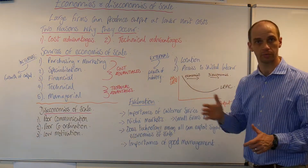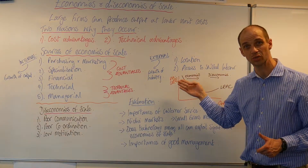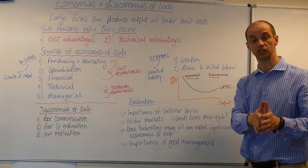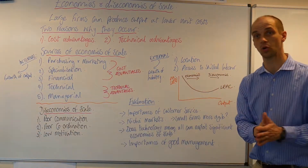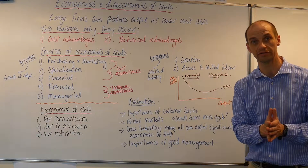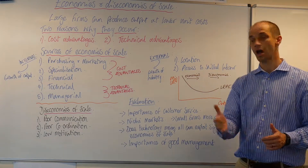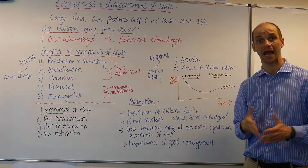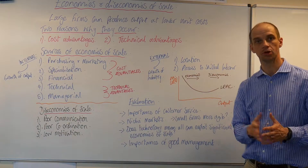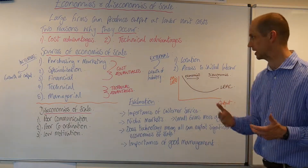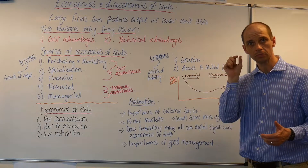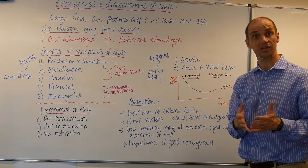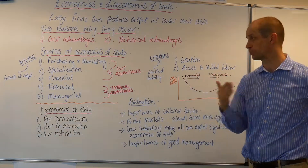There are also external economies of scale that a firm can exploit, and this is really about the growth of the industry overall. This refers to location — perhaps a heritage-based product such as Scotch whisky, where coming from Scotland provides certain value — but it can also be about the location being very cheap in terms of factors of production. Secondly, it could be access to skilled labour. Longbridge in Birmingham has long been known for car assembly and manufacturing, so firms re-establishing themselves there had access to skilled labour because of the industry previously there.